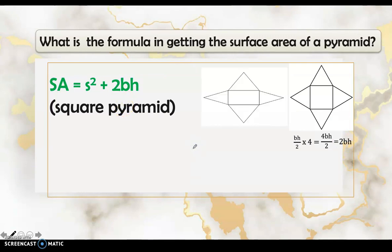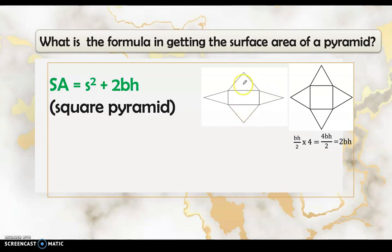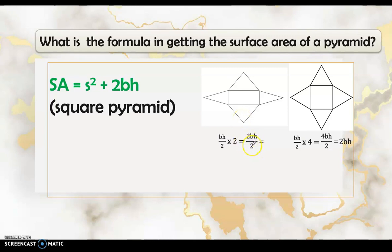For a rectangular pyramid, the base is a rectangle so the sides are not all equal. Looking at the net, the triangles are not all equal — but the two triangles sharing the same base and height are equal to each other. We find the formula for the four triangles: the area of the first triangle is base × height ÷ 2, and since there are two equal triangles, we get b₁h₁.